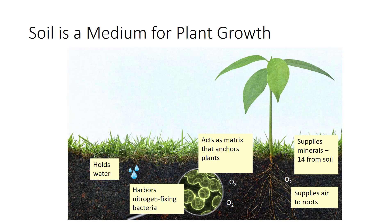Plants release oxygen during photosynthesis but consume it during respiration. Of 17 nutrients usually considered to be needed by most plants, plants absorb 14 from soil. Carbon, oxygen, and hydrogen come from air and water; the rest are from the soil. Nitrogen comes indirectly from the atmosphere via the soil. While leaves are able to absorb some nutrients, roots are specialized for the purpose.